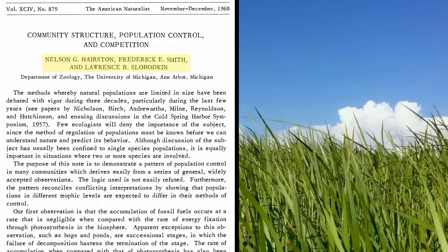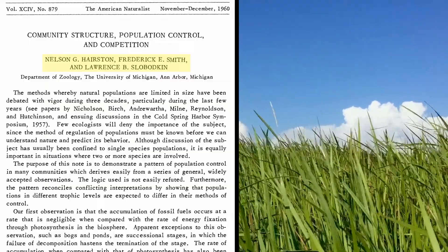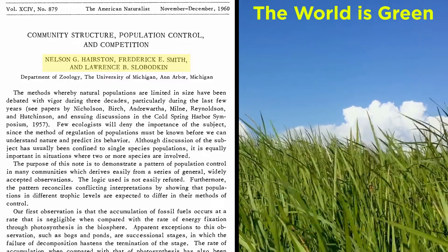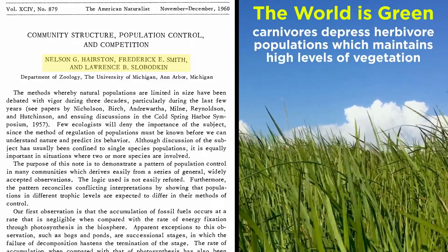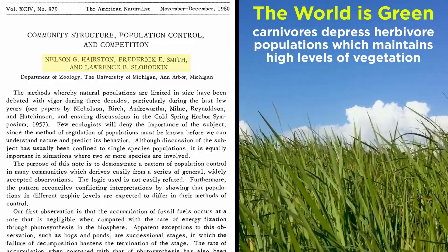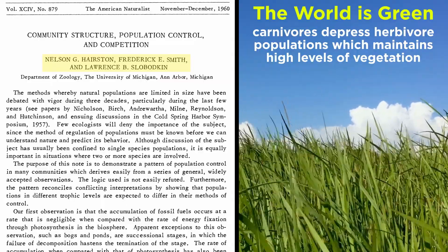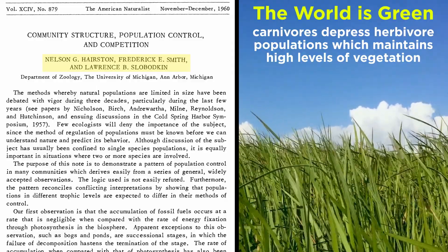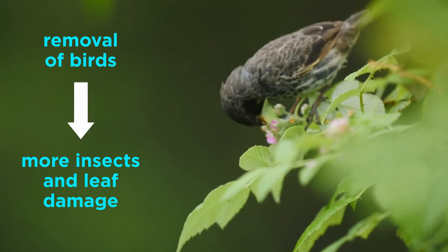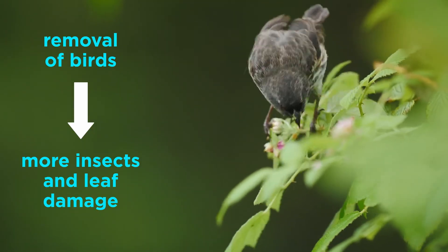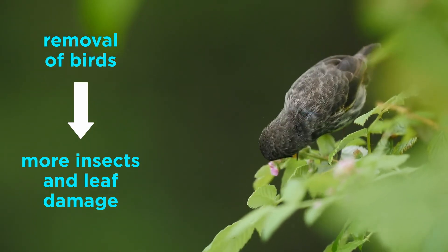Nelson Hairston, Frederick Smith, and Larry Slobodkin first introduced the concept of top-down control with the frequently quoted 'the world is green' proposition. They proposed that the world is green because carnivores depress herbivores and keep herbivore populations in check; otherwise, herbivores would consume most of the vegetation. Indeed, a bird exclusion study demonstrated that there were significantly more insects and leaf damage in plots without birds compared to the control.